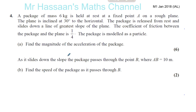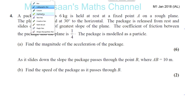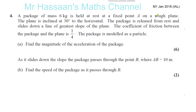January 2018, M1 IAL. A package of mass 6 kilograms is held at rest at a fixed point A on a rough plane — not horizontal, on a rough plane. Rough means there's going to be friction involved. The plane is inclined at 30 degrees to the horizontal. The package is released from rest and slides down a line of greater slope of the plane. The coefficient of friction between the package and the plane is one quarter. The package is modelled as a particle. Find the magnitude of acceleration of the package.